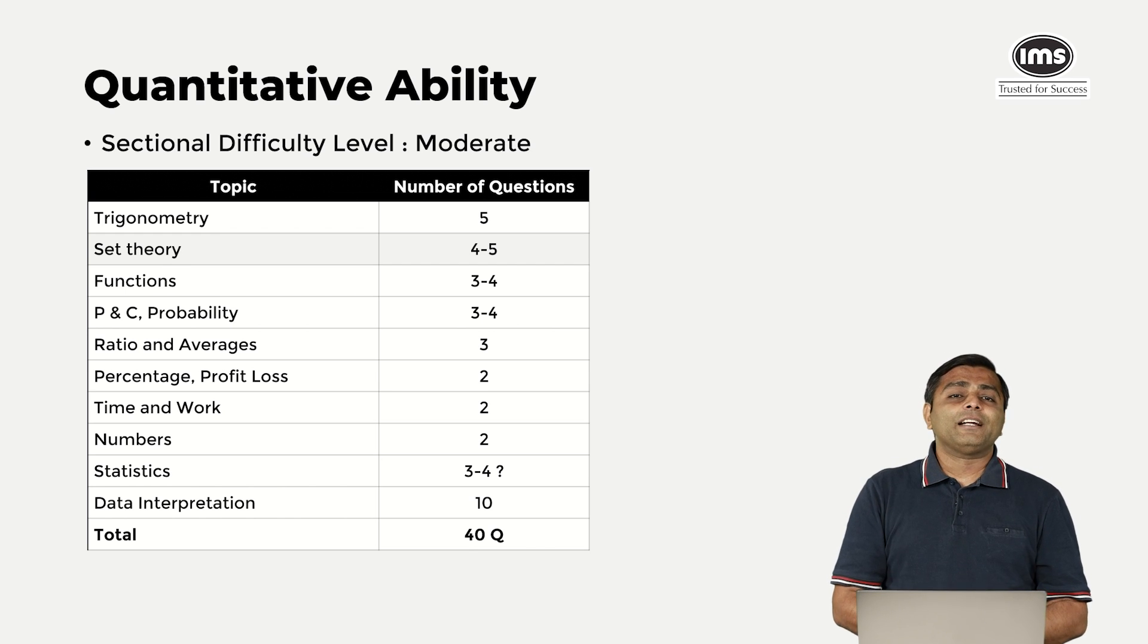Statistics, we have put a question mark there. People who have got it have got around 4 to 5 questions of statistics. People who haven't have not got any question on statistics. So depending on your luck, you may see either nothing of statistics or you may see a good 3 to 5 questions of statistics. Statistics as an area can be a little tricky when it comes to NPAT. The basic mean, median, mode formulas are there to apply. If the questions can be solved using those, good enough. If not, they are a little tricky, so I would advise that you stay away from such questions.